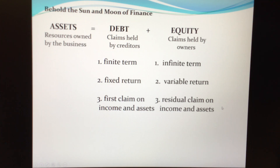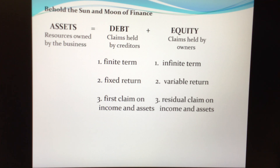Equity has a residual claim on income in that all expenses must be deducted before you can have profit. If the company generates a dollar in revenues, all expenses must be deducted before profit remains. It's only the profit — what remains after all the expenses of operation are deducted from revenues — that equity holders have a claim to. The profits of a business belong to the equity holders. And again, a residual claim on assets means that if the company goes under or into receivership, creditors have a prior claim and equity holders are left at the very end of the line.